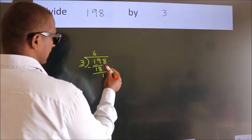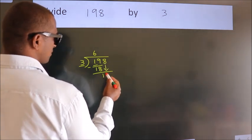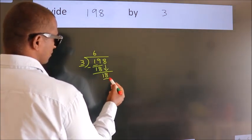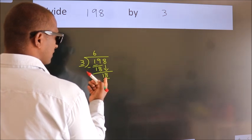After this, bring down the beside number. So 8 down. So 18. A number close to 18.